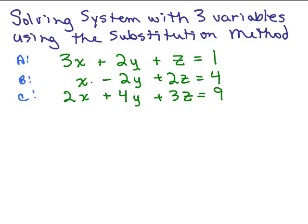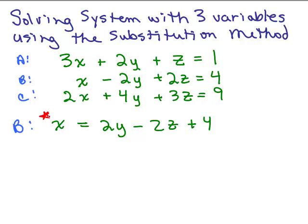We ask: is it easy to solve for any of the variables here? In the second equation, it's easy to solve for X because the coefficient of X is 1. So I'm going to take equation B and solve for X. If we take that equation and solve for X, we add 2Y and subtract 2Z from both sides to get X equals 2Y minus 2Z plus 4. I'll put a star here — this is something I'll refer back to later once I know what Y and Z are.